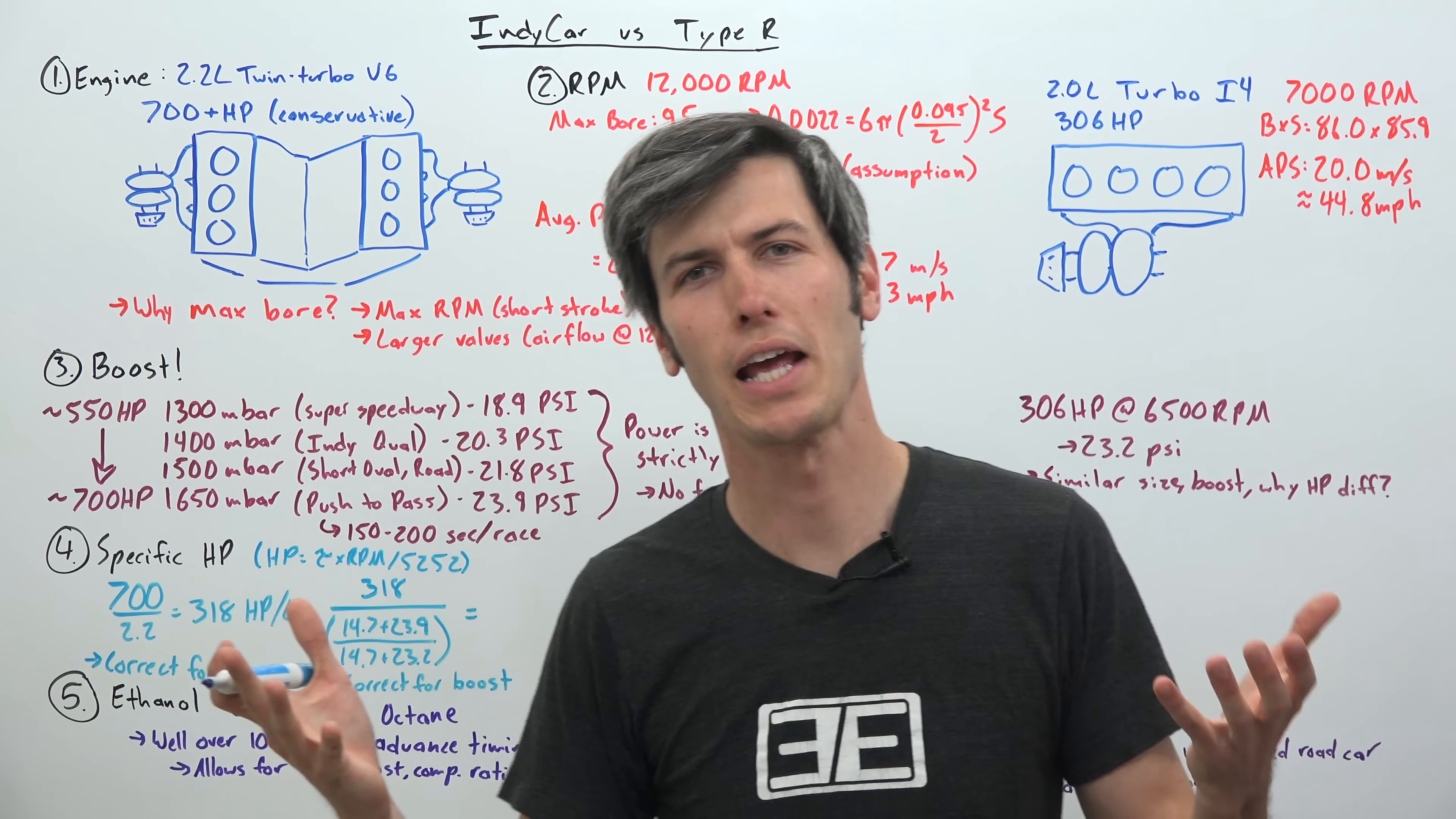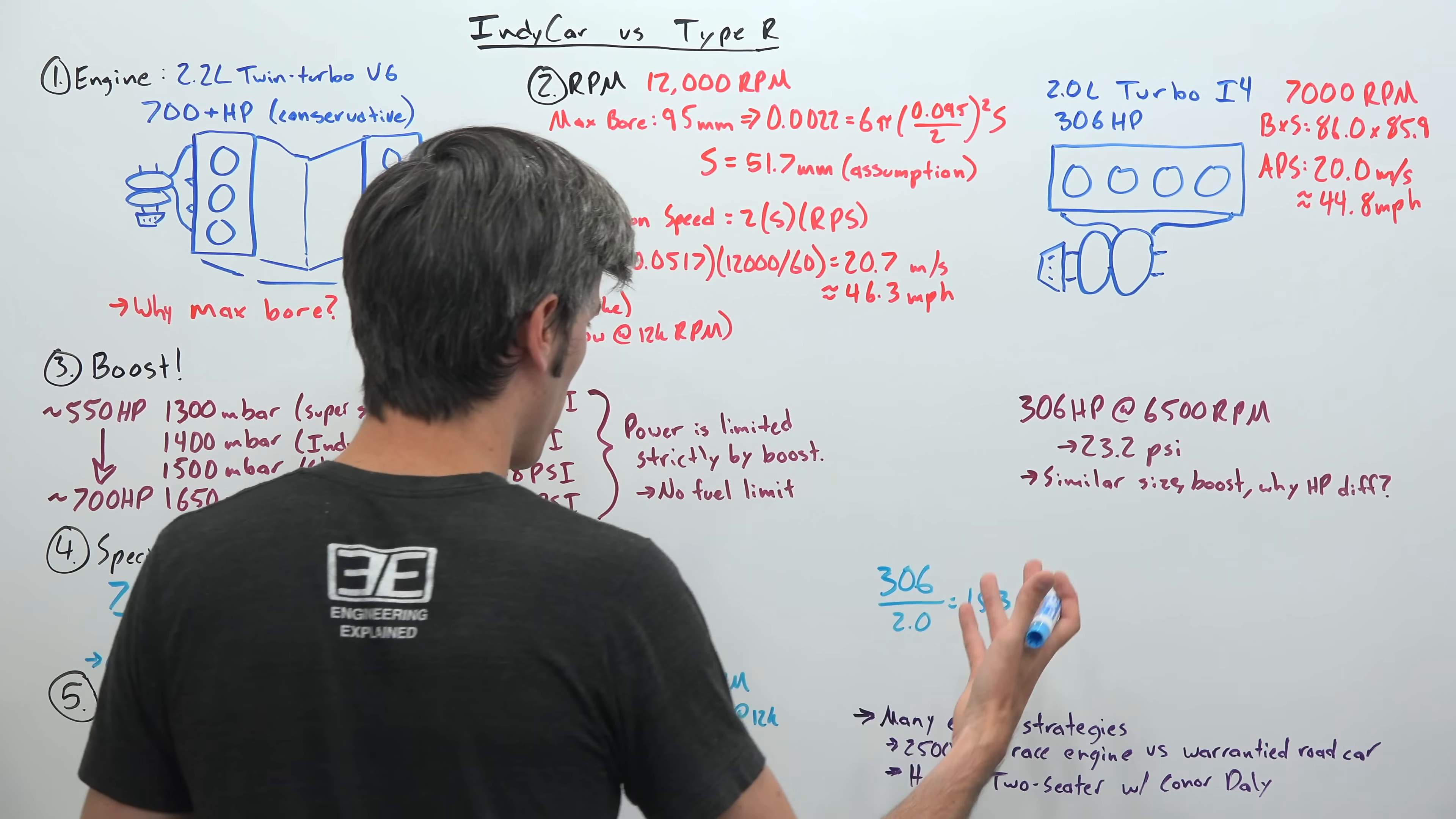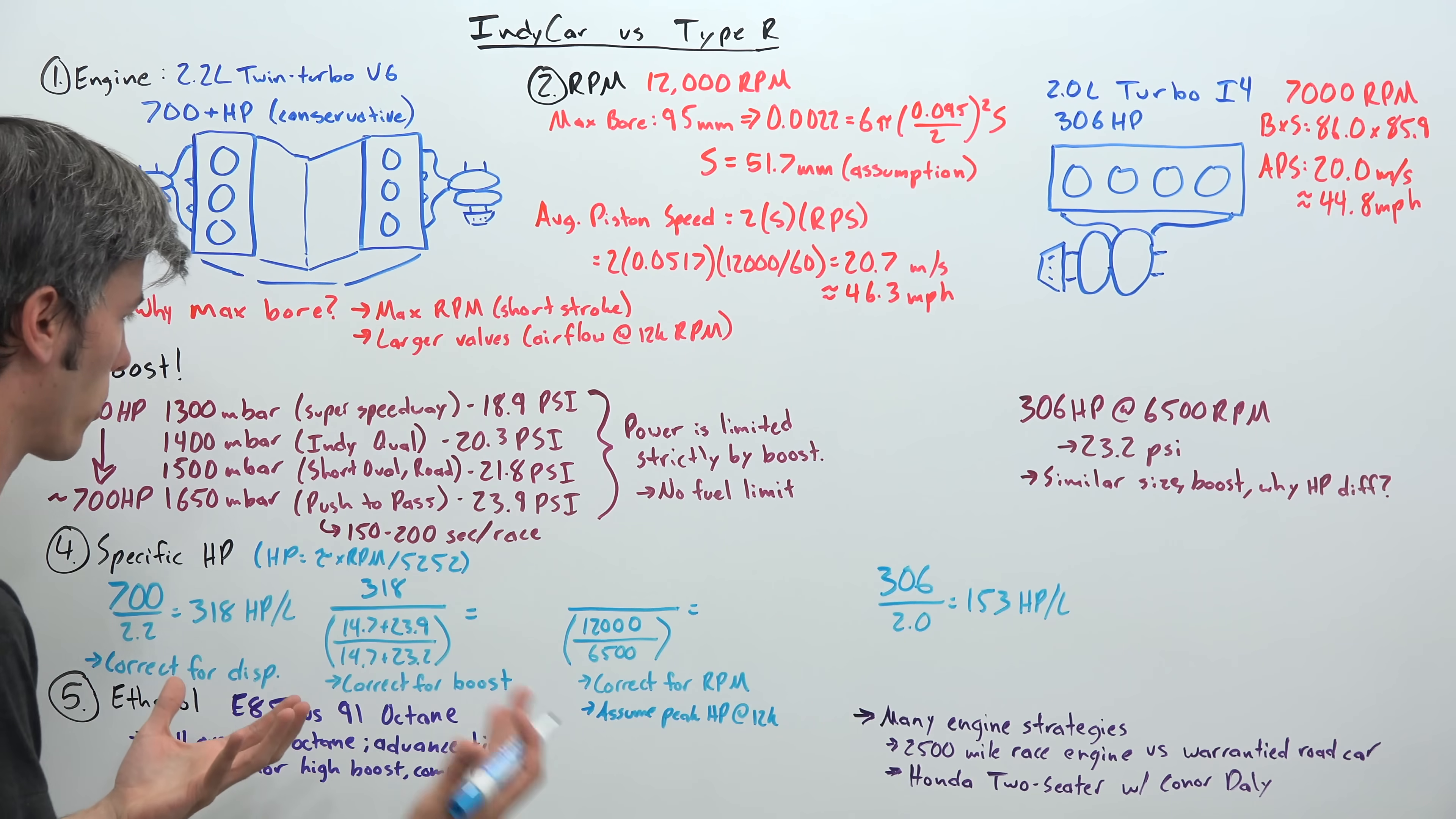So to get a more apples to apples comparison between the two engines, we're going to look at specific horsepower. So the 2.2 liter is making about 700 horsepower, 700 divided by 2.2 gives us 318 horsepower per liter. In the Civic Type R we've got 306 divided by 2.0, that gives us 153 horsepower per liter. So what we're doing here is correcting for displacement. So we're trying to share a common, which is just one liter displacement, and see how much power do these things make?